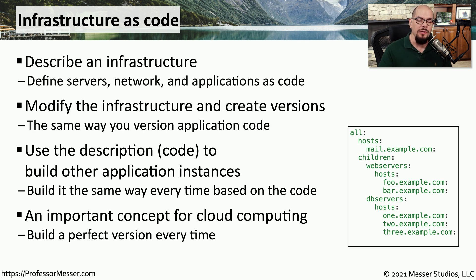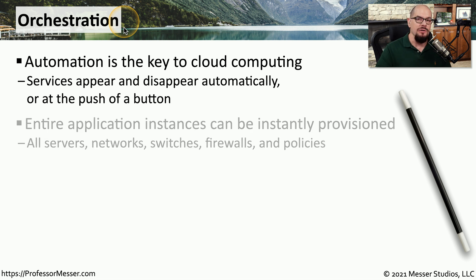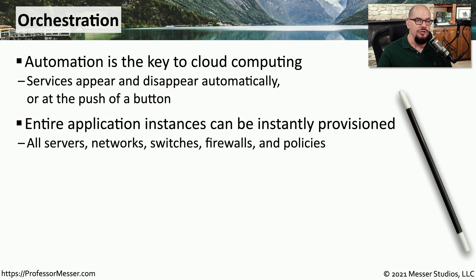This ability to define our entire infrastructure as code is a foundation of cloud-based technologies, and it also means that we can build one entire perfect system and then begin duplicating that system automatically. To really take advantage of infrastructure as code, we need some way to automate everything that happens behind the scenes. We refer to this cloud-based automation as orchestration, which means we could build out entire application instances or tear them down with the code we're providing to the cloud.